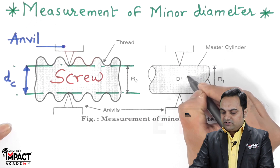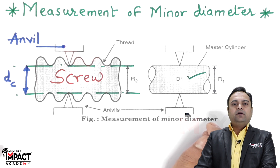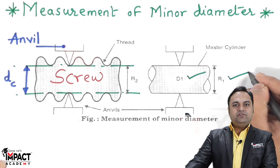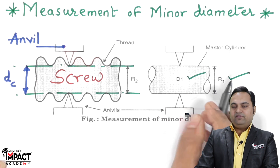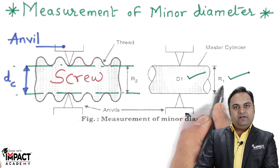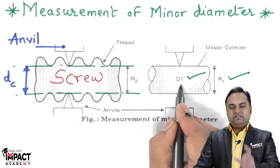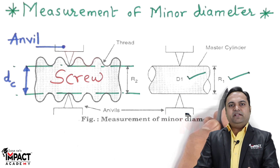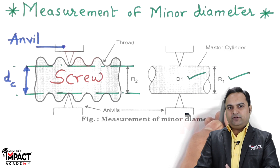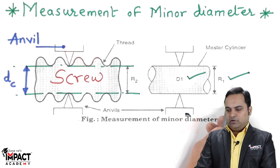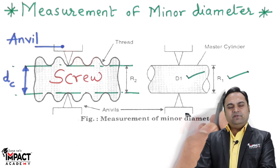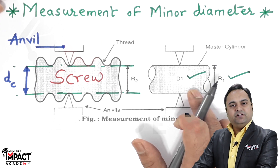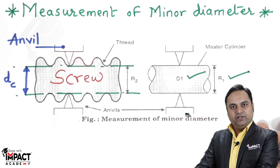D1 is known to us because it is a standard master cylinder, and R1 is the reading we get from the master cylinder on the floating carriage micrometer. There may be a slight difference between D1 and R1 because D1 is the original diameter while R1 is the reading obtained by fitting it onto the floating carriage micrometer — some errors may arise. So R1 is the reading of the master cylinder obtained from the floating carriage micrometer.